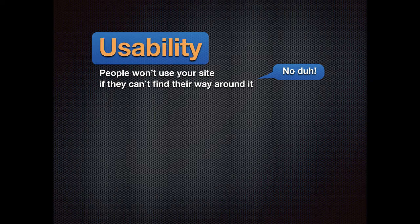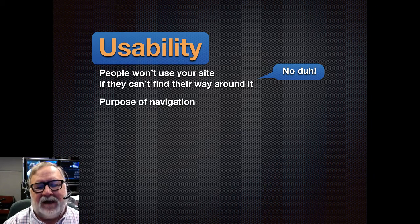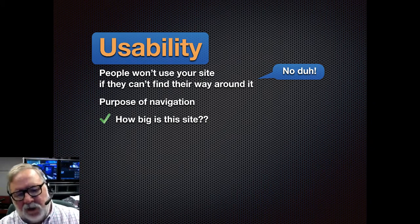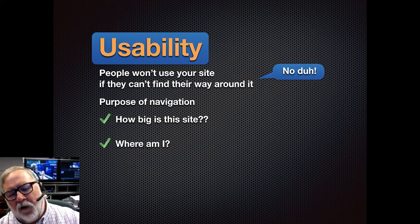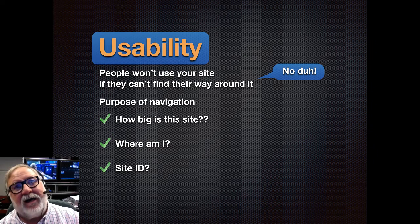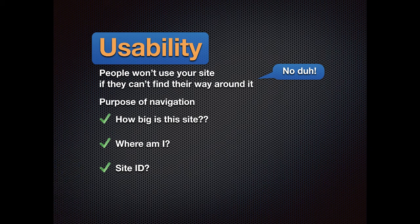People can't use a website if they can't find their way around it. So you have to have meaningful navigation. That means: can you tell from looking at the page how big the site is? Can you tell where you are on the site? Does it have a site ID? Does every page have a name? When you click on a page, does it look like you went to a completely different website? The strategy is to always have your page ID on every page. And if the site's big — more than 10 or 20 pages — it should have a search function.